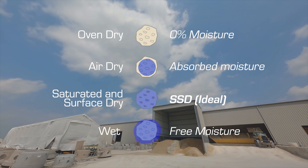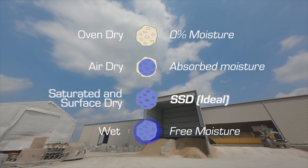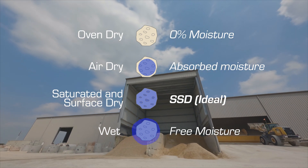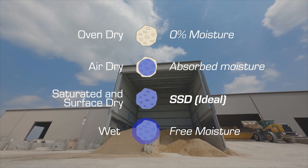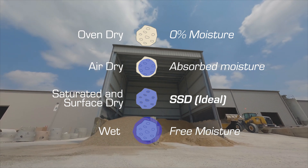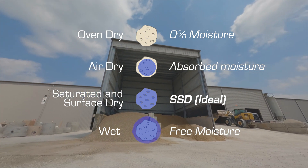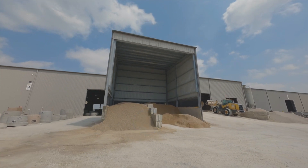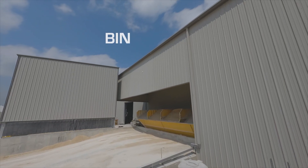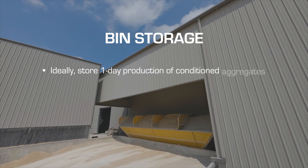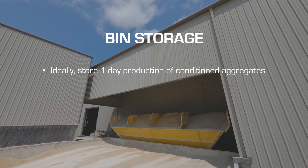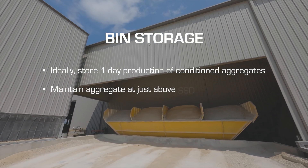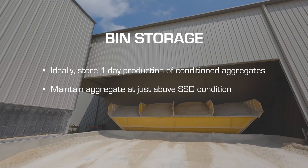It is best practice to maintain SSD, or surface-saturated dry, in aggregate moisture before being used in the batching process. This includes bin and ground storage locations. Best practice is to size aggregate bins to hold a minimum of one-day production of conditioned aggregates maintained at just above SSD condition.